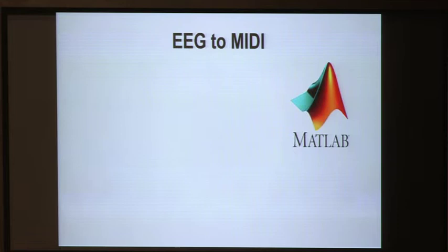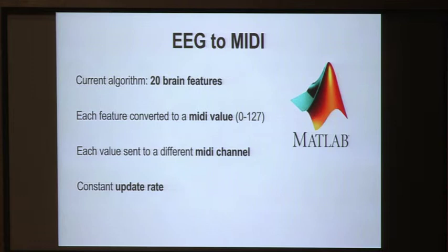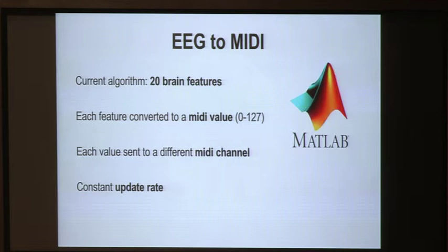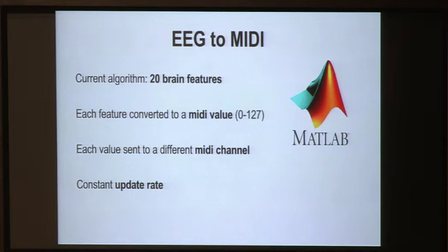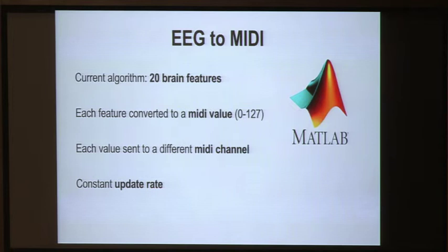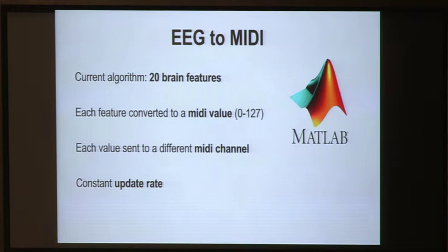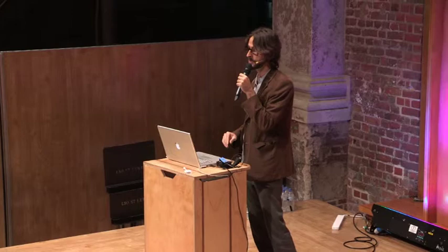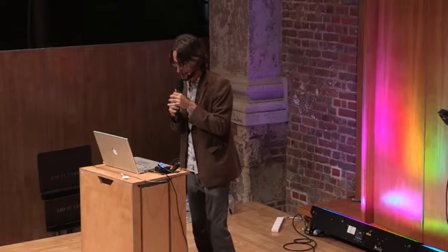The current algorithm uses 20 brain features out of 120 potential ones, and 20 are plenty right now. It takes each input and converts it into a MIDI value between 0 and 127, then sends it to a different MIDI channel, so we have independent MIDI channels I can assign to pretty much anything and create instruments from. There is a constant update rate for packets of information, determined by both the software and the hardware. The best version we've had is almost seamless — reacting immediately — and I channel it through Ableton Live.